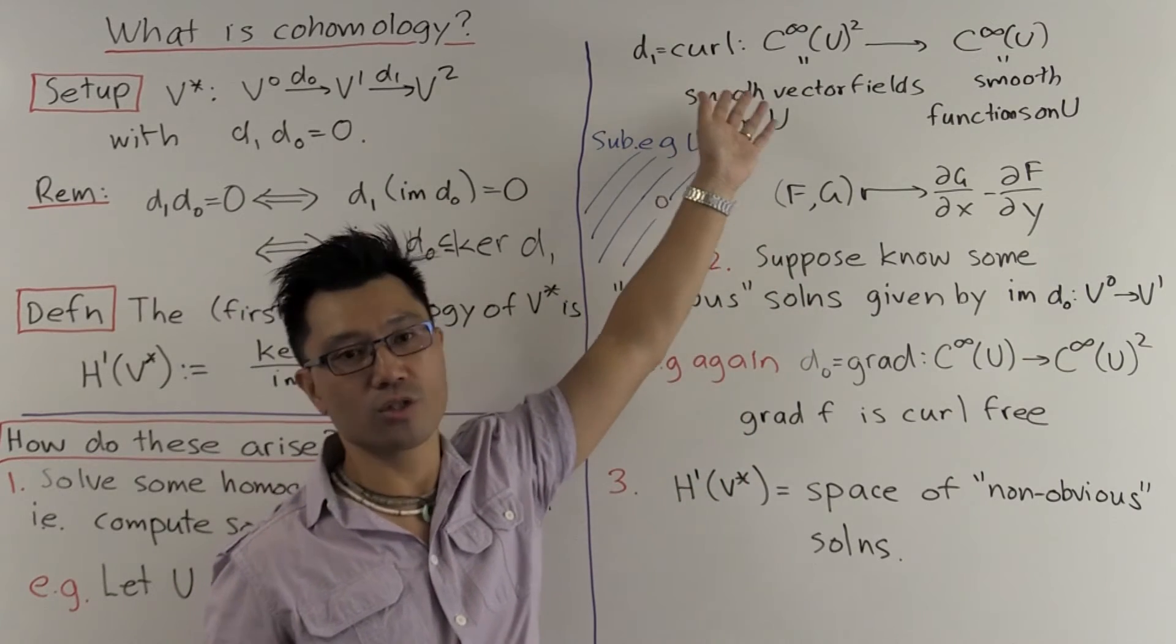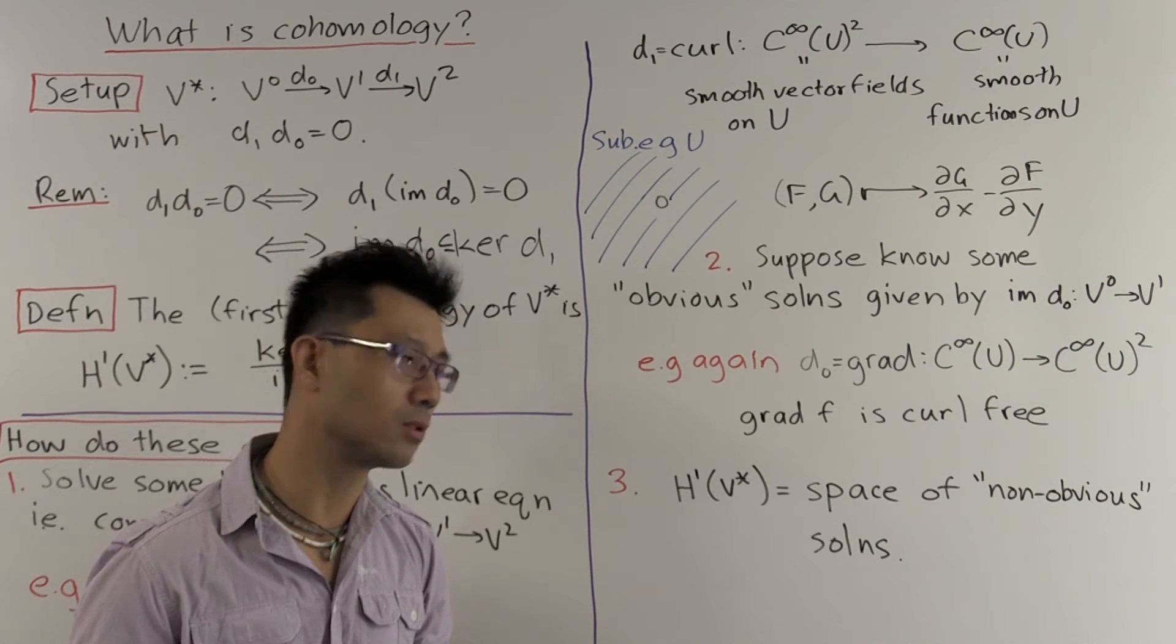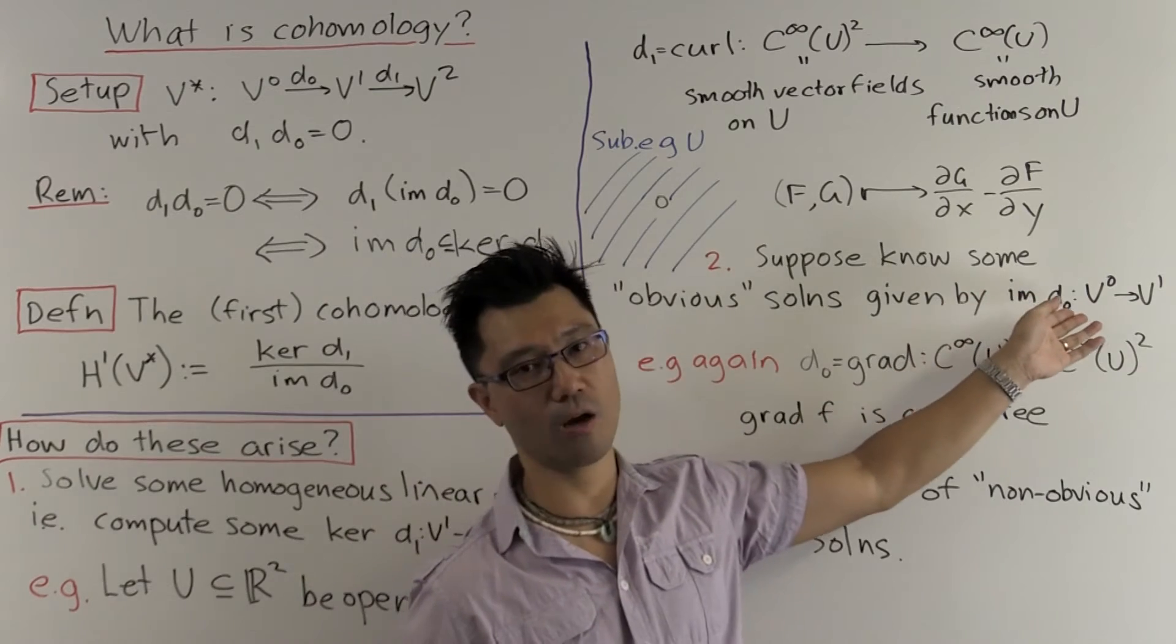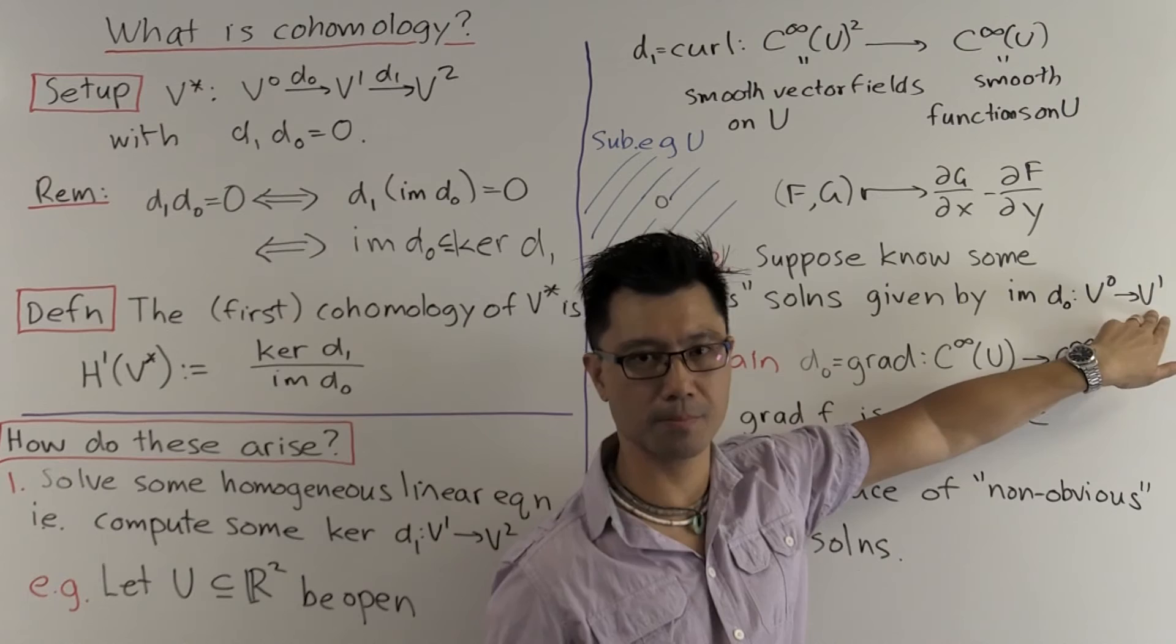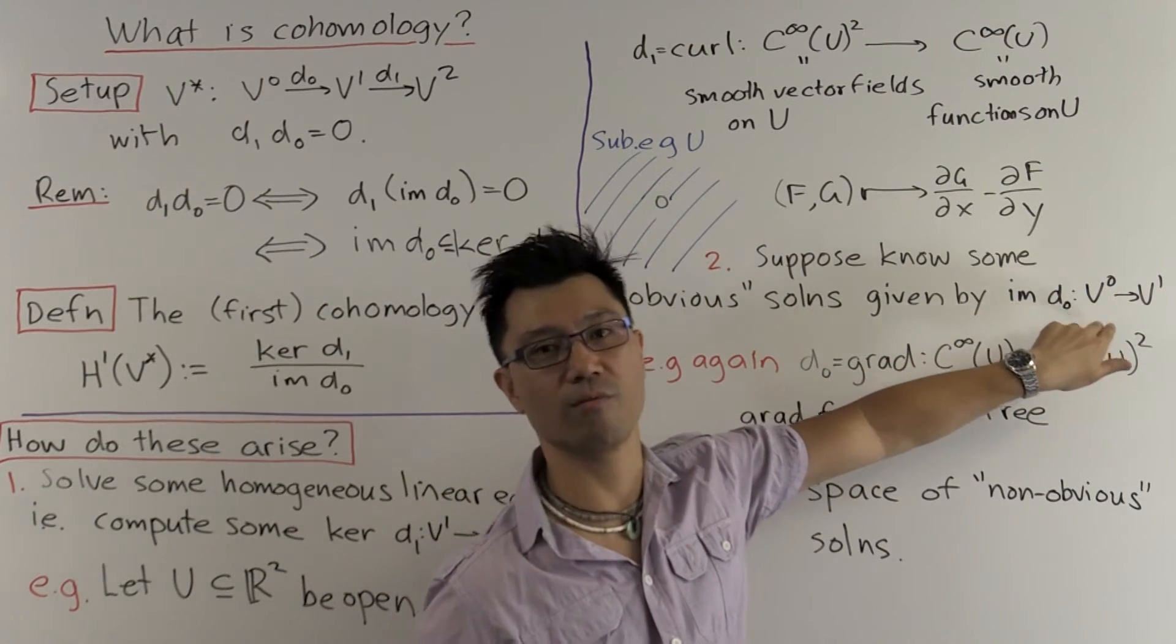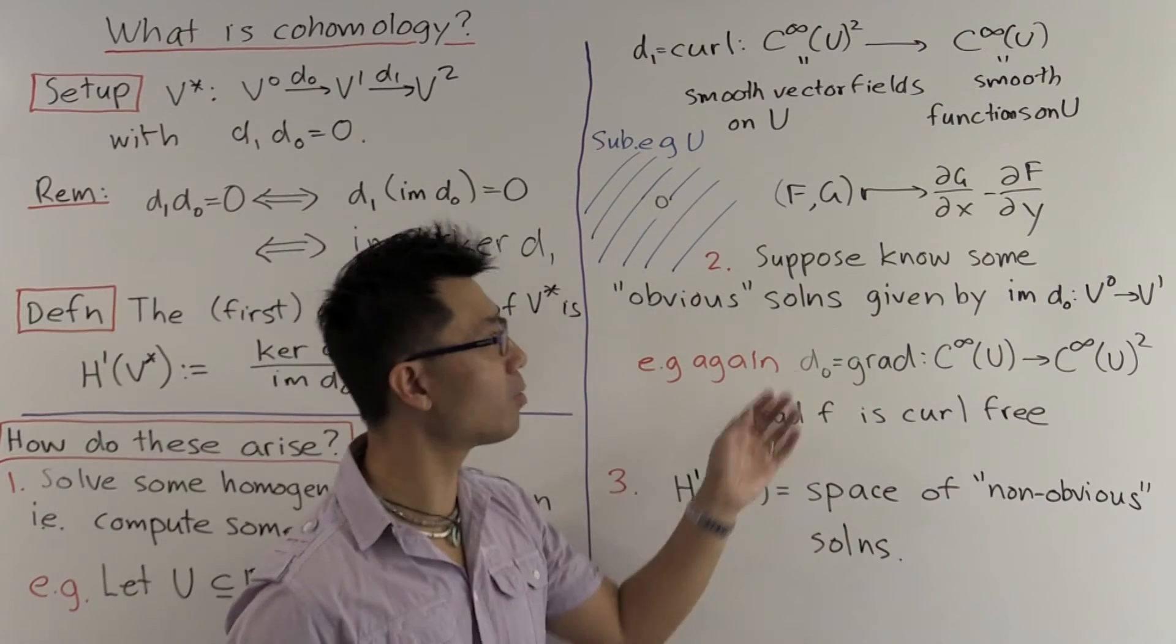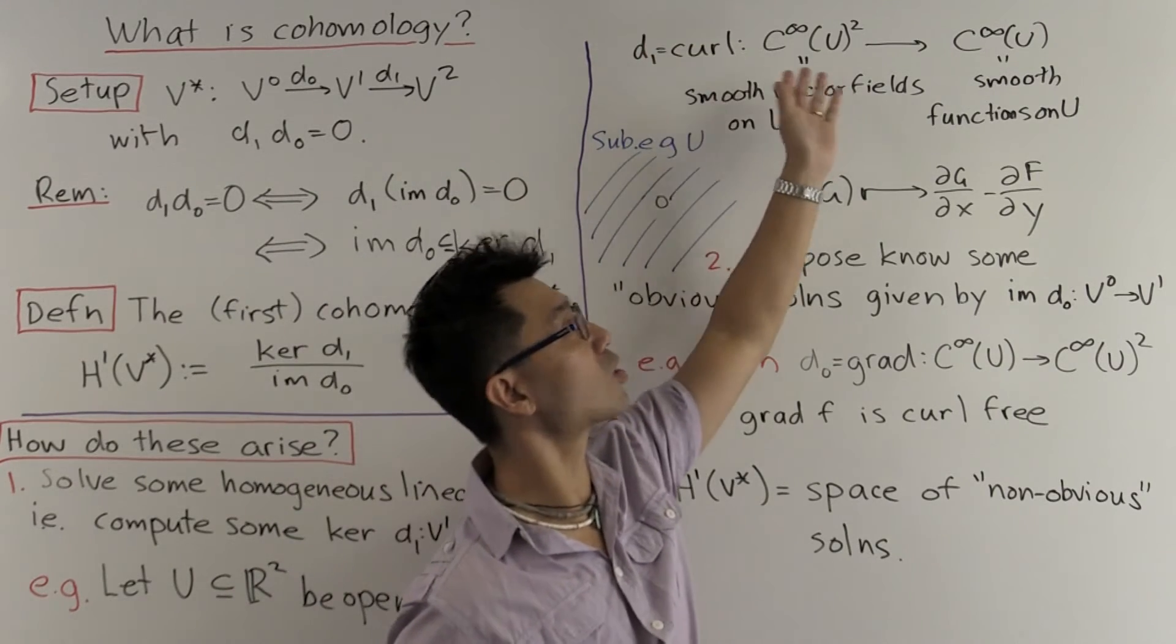OK, so that's the first linear map, d1. What about d0? Well suppose now, in trying to solve this problem, you know that there are some obvious solutions floating around. And suppose those obvious solutions are given by the image of some other linear map.